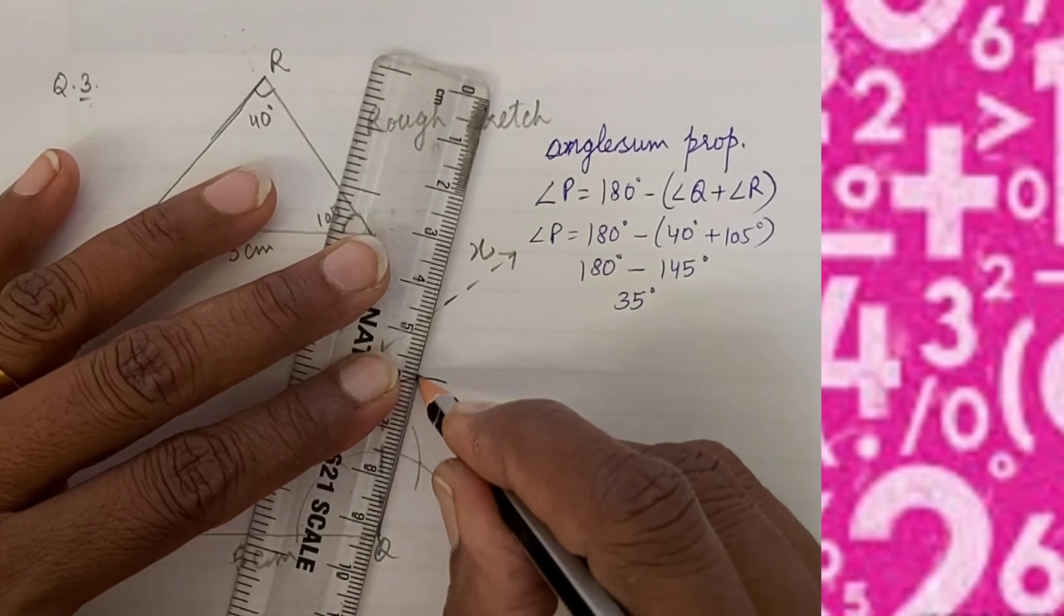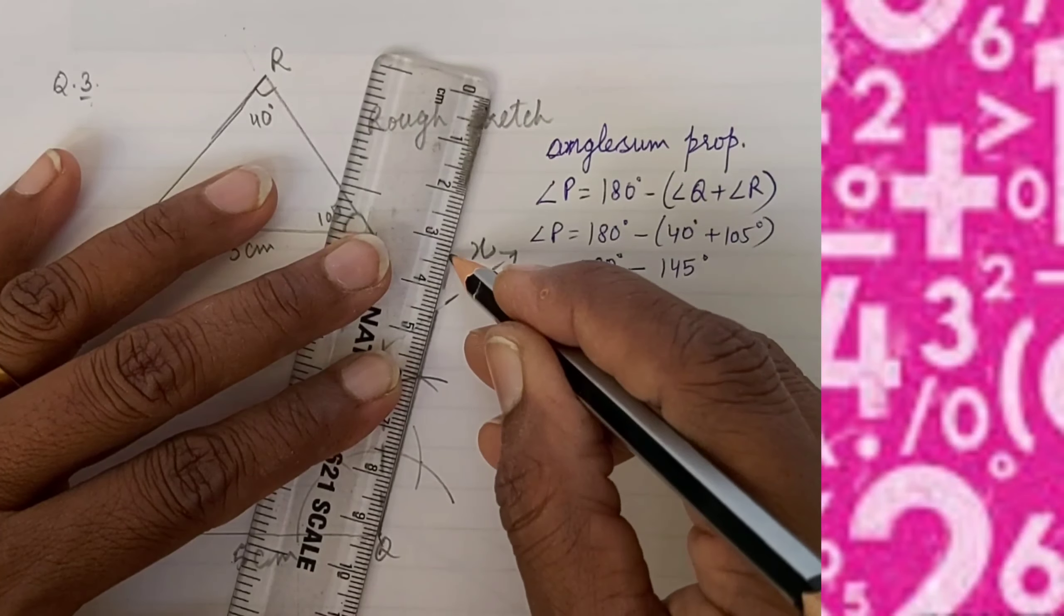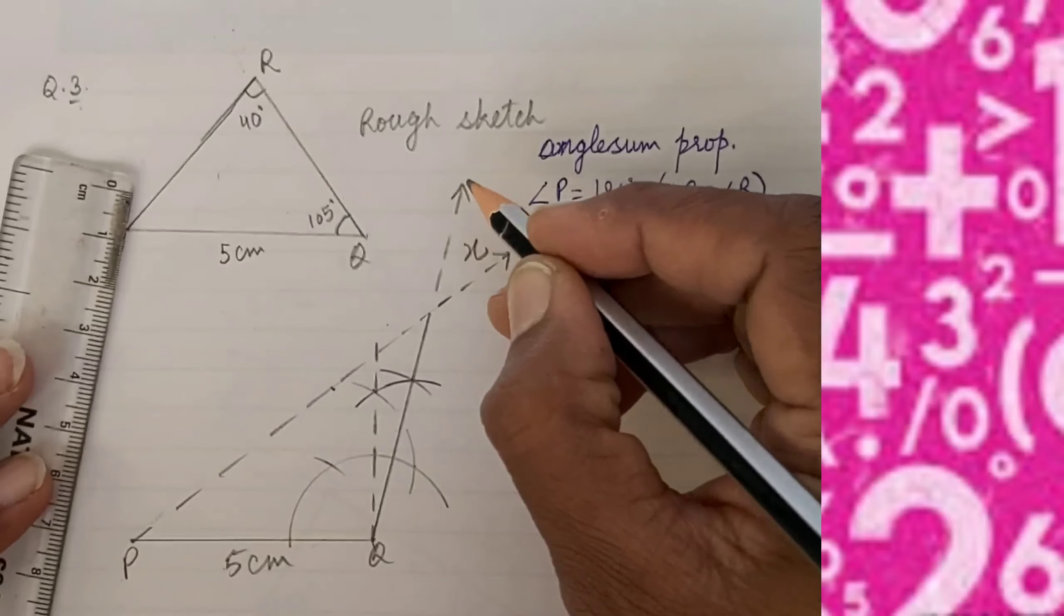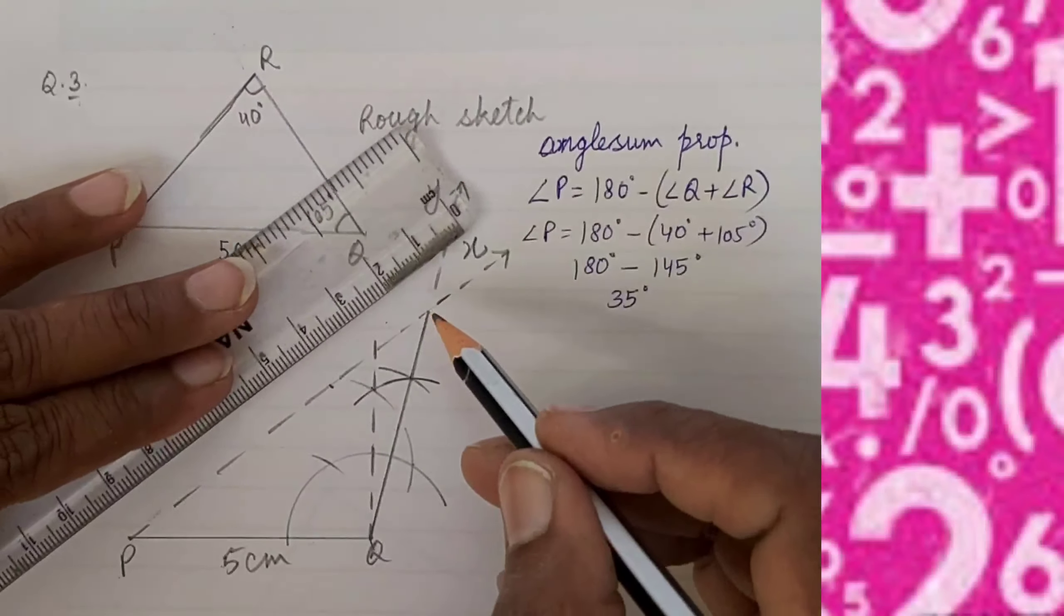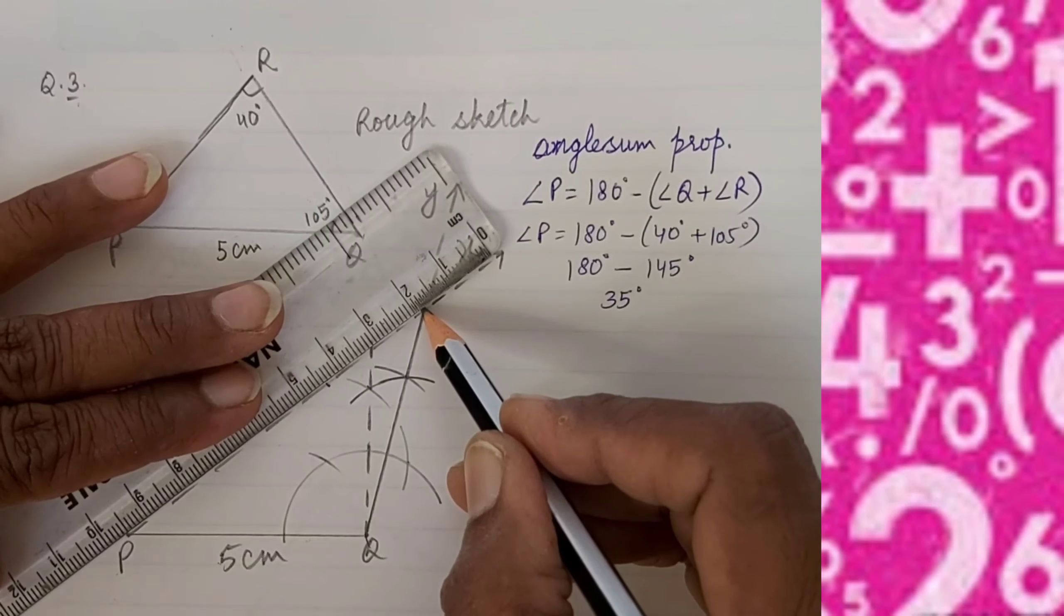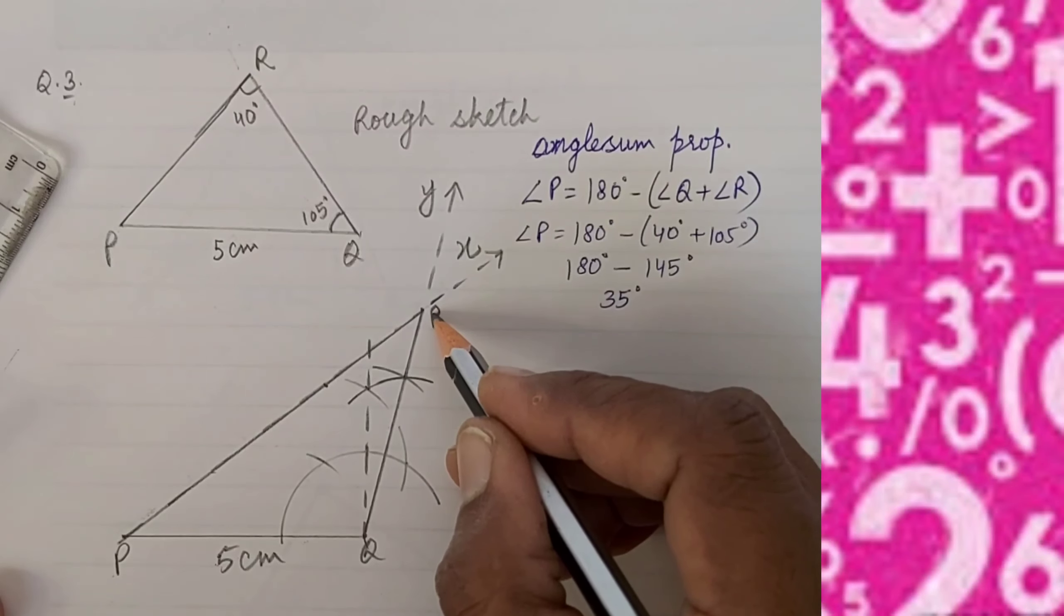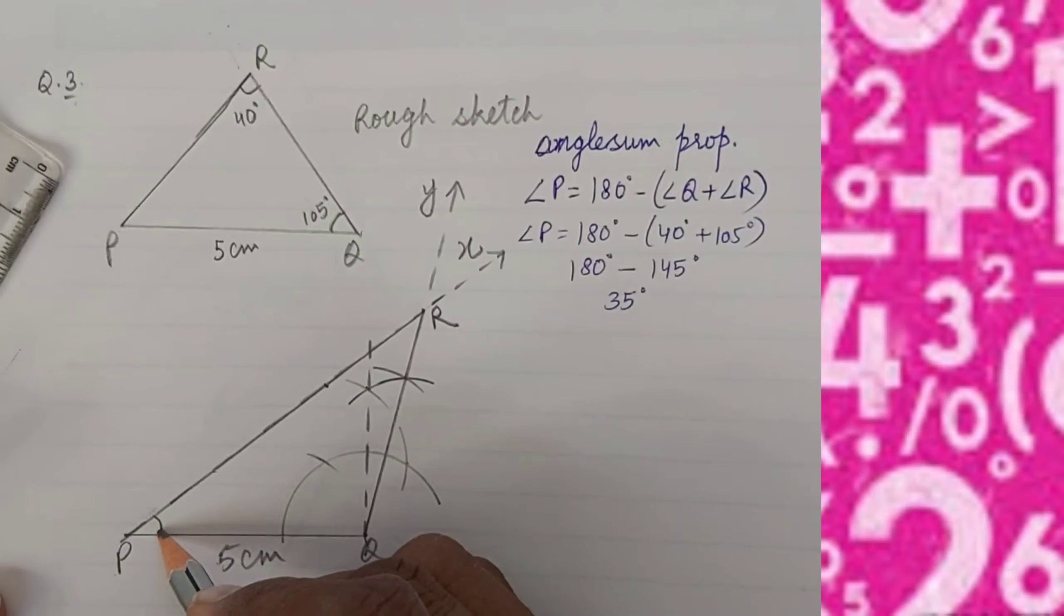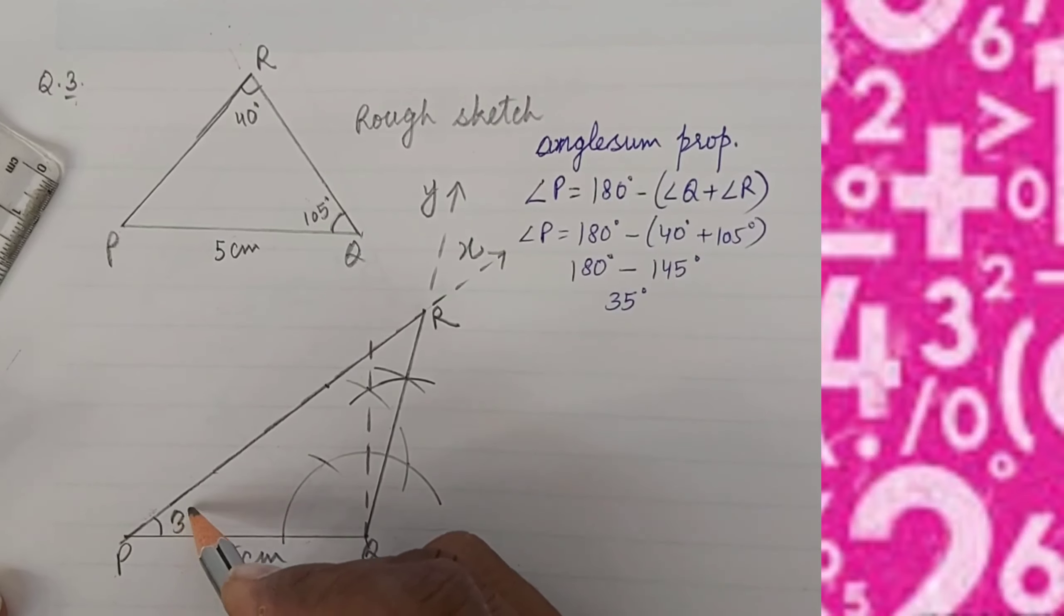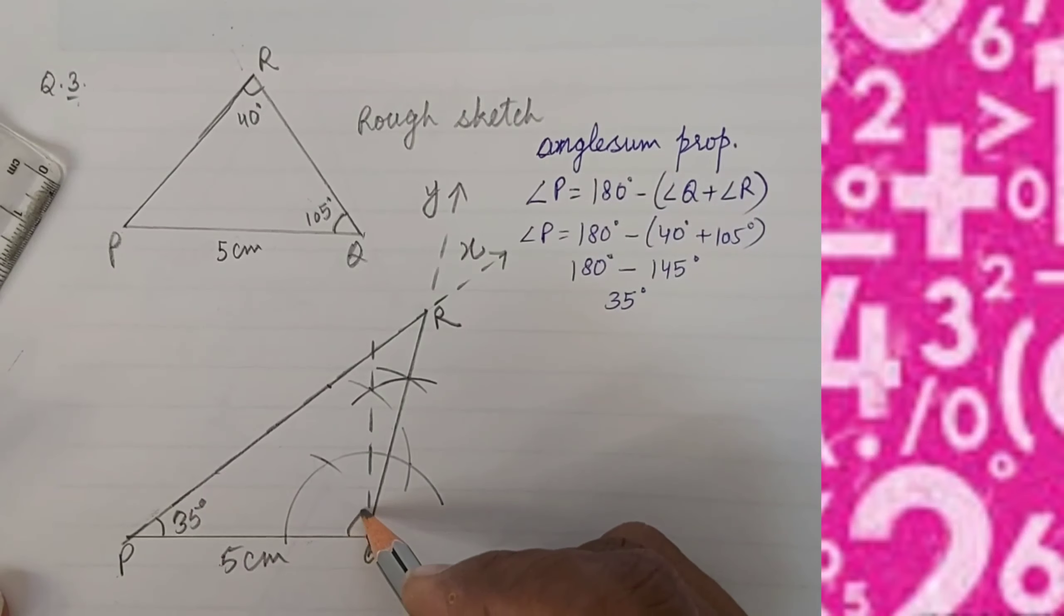The intersecting point of rays PX and QY is point R. Don't forget to label the figure.